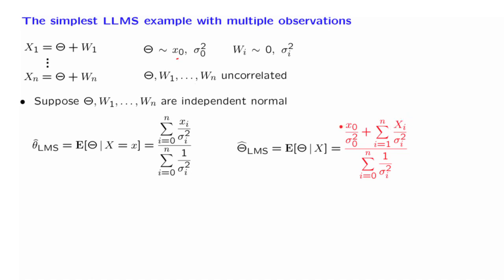On the other hand, this x0 is actually the prior mean of theta. So this is a constant. It's not random. And that's why we keep it with a lower case notation.